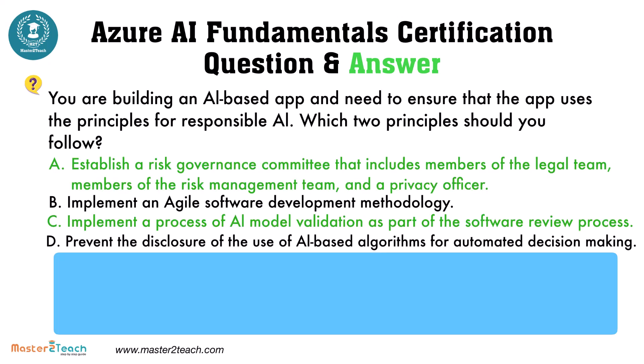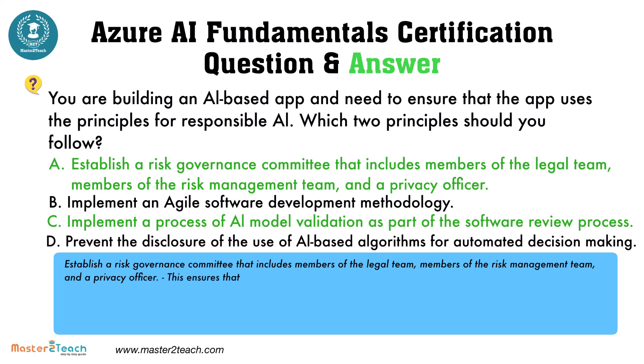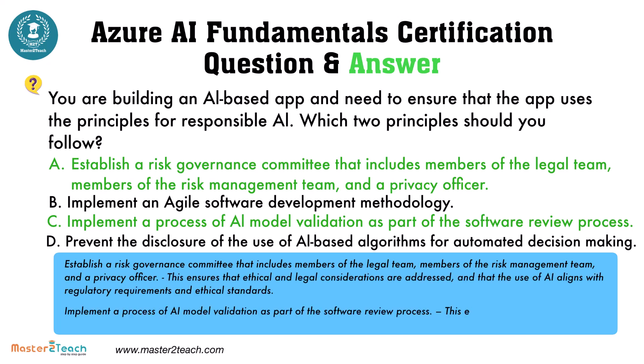The correct answers are: establish a risk governance committee that includes members of the legal team, members of the risk management team, and a privacy officer; and implement a process of AI model validation as part of the software review process. This ensures that AI models are thoroughly tested and validated for accuracy, fairness, and reliability before deployment.